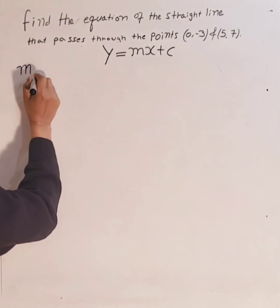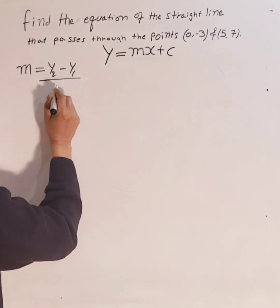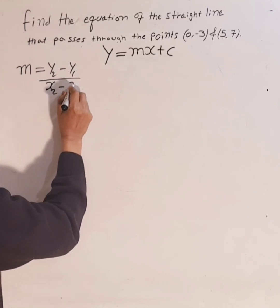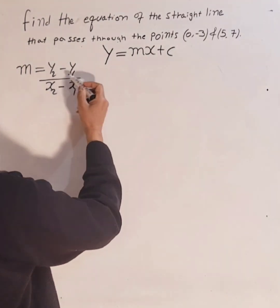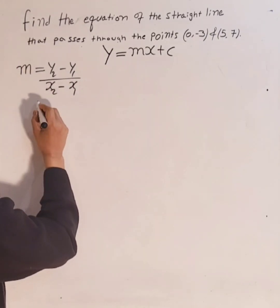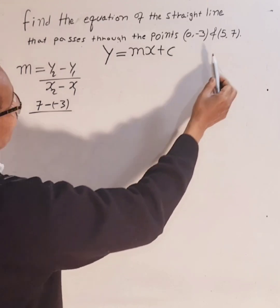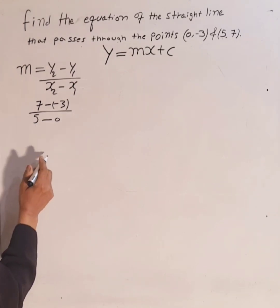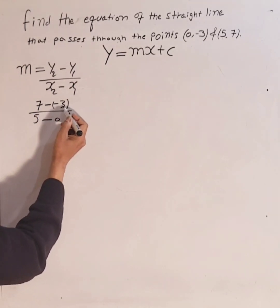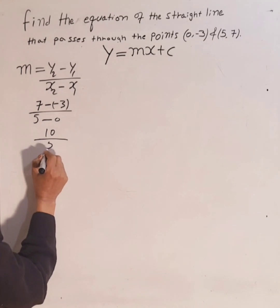Let's calculate the gradient m. M equals (y2 - y1) over (x2 - x1), the change in y over change in x. So y2 is 7 and y1 is -3, so 7 take away negative 3, over x2 is 5 and x1 is 0, so 5 take away 0. Negative times negative is positive, so 7 plus 3 is 10. 5 take away 0 is 5. So 10 divided by 5 is 2.